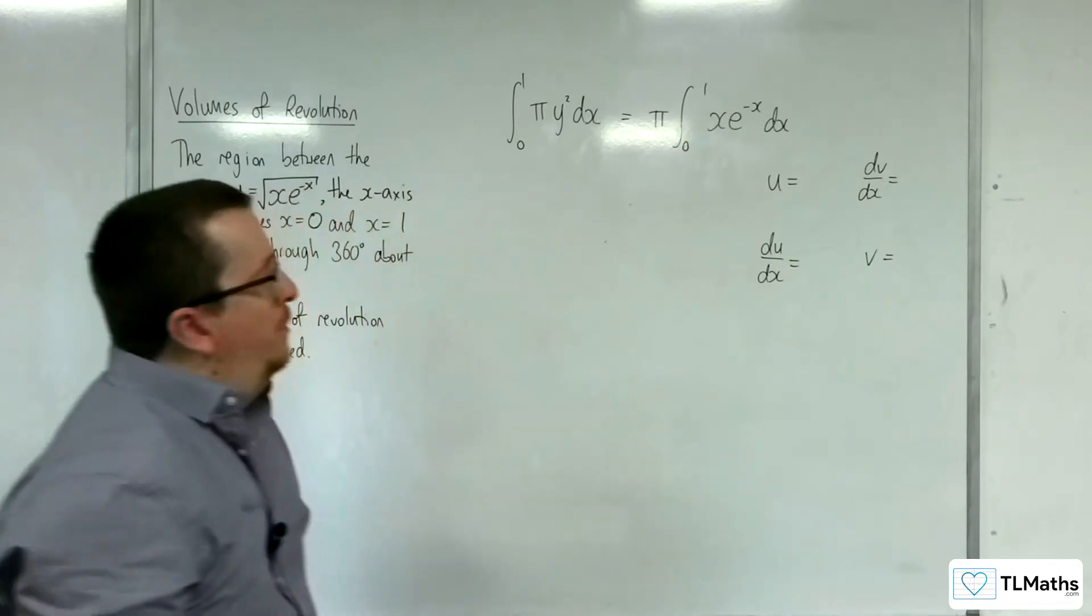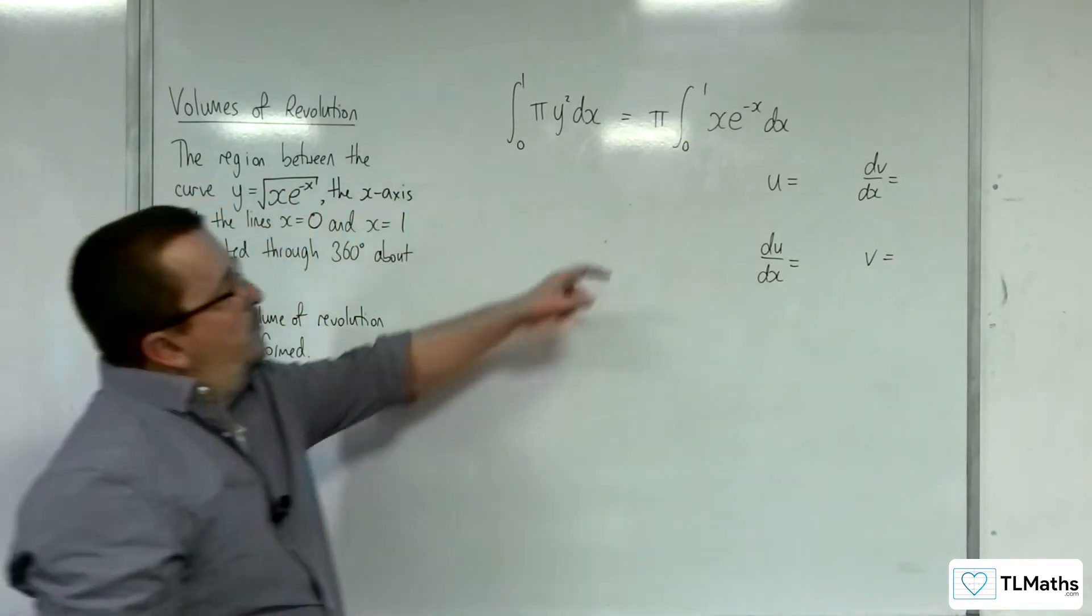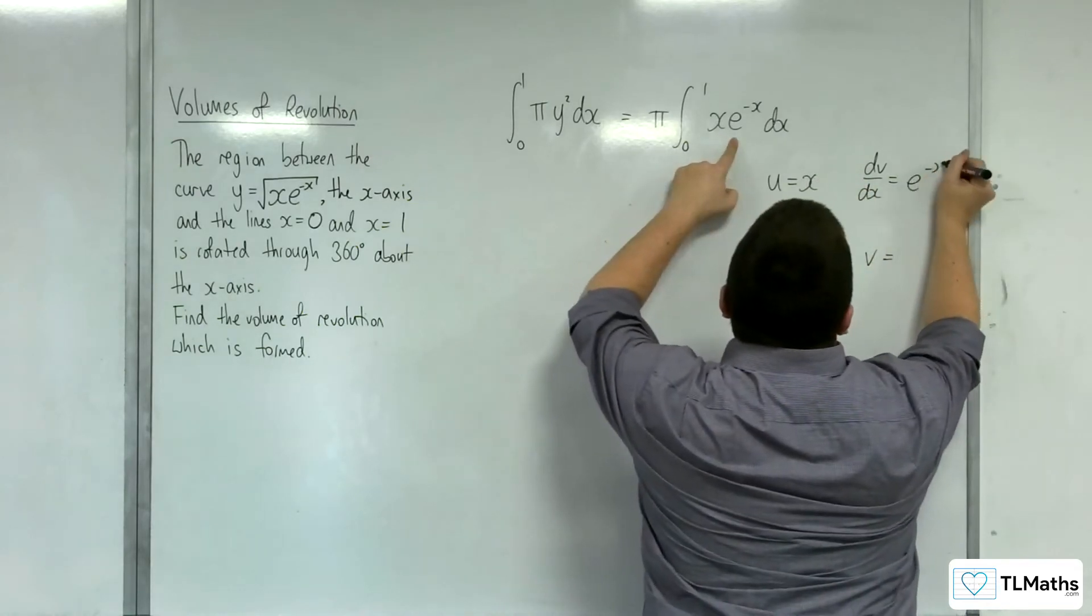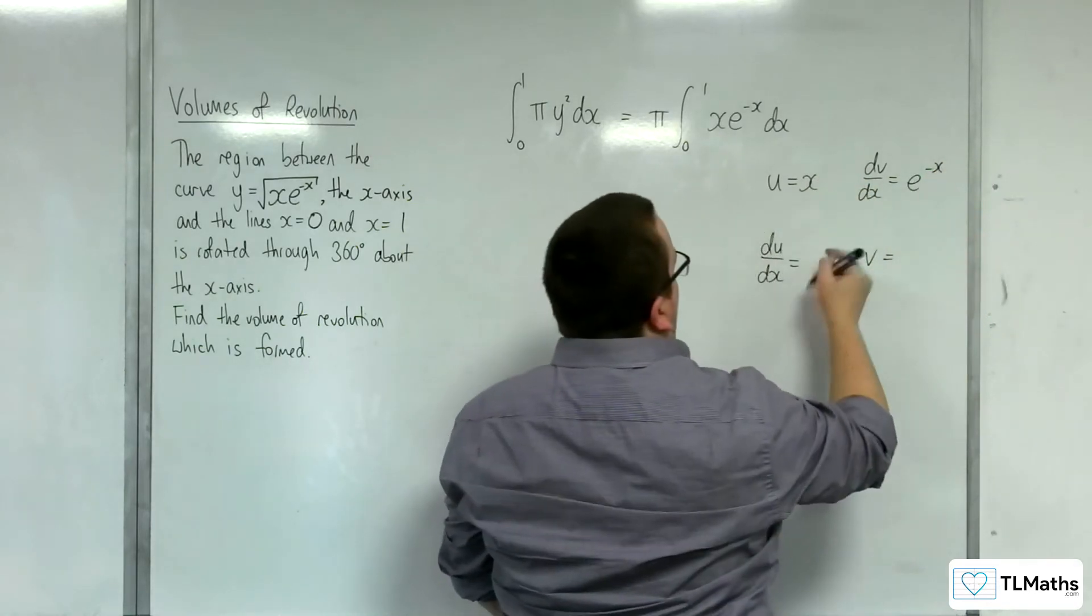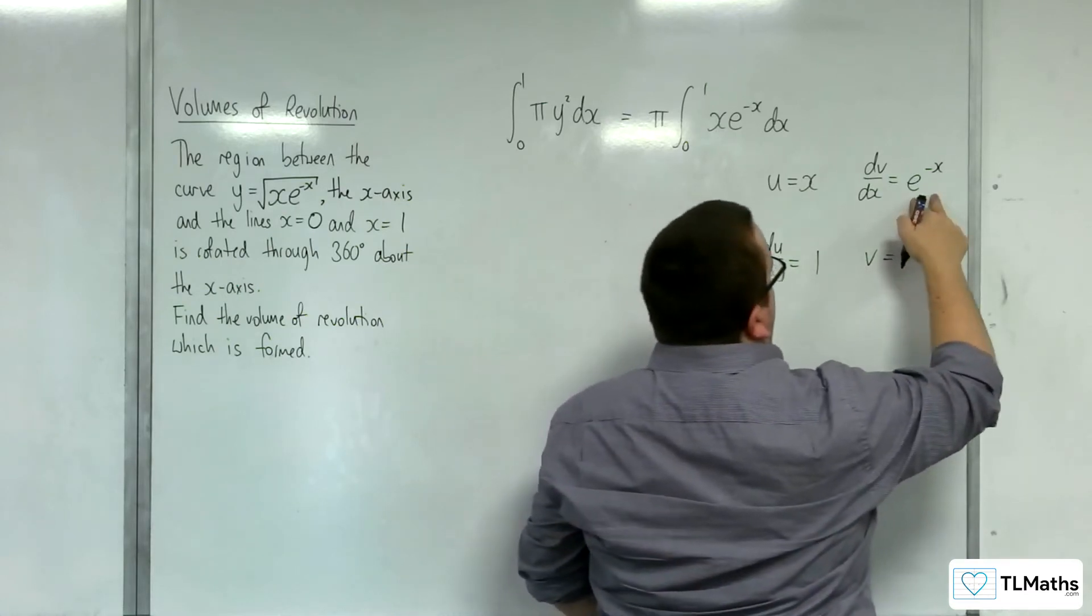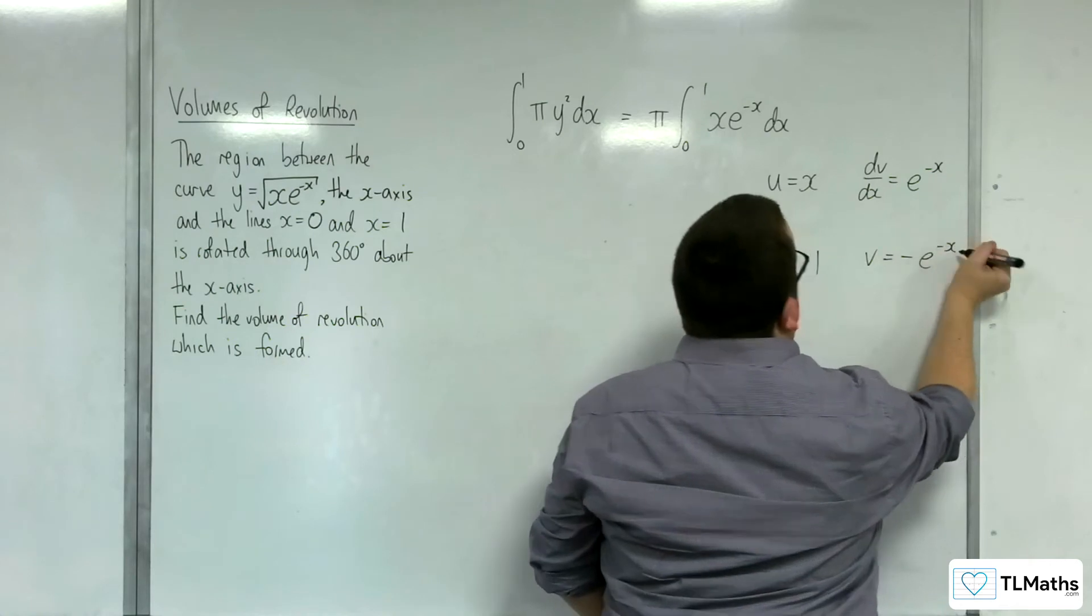So using the LATE rule for integration, we would have x as the u, and e to the minus x as the dv by dx. Differentiating x with respect to x, we get 1, and integrating e to the minus x, we get minus e to the minus x.